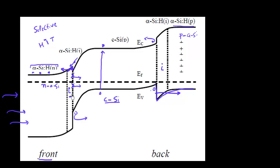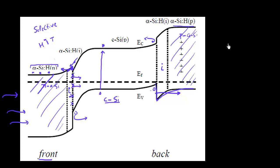The thin intrinsic layer helps achieve good surface recombination velocity, while the selective contacts are realized by doping the amorphous silicon layer N-type on the front and P-type on the back. Another advantage of realizing junctions in the amorphous silicon layer is that the junctions can be formed during growth. You don't need a high-temperature process to dope crystalline silicon layers using diffusion or activating implants, which typically require a large thermal budget. As a result, the whole cell can be formed with a very low-temperature process flow.